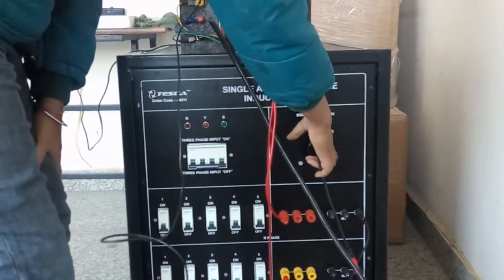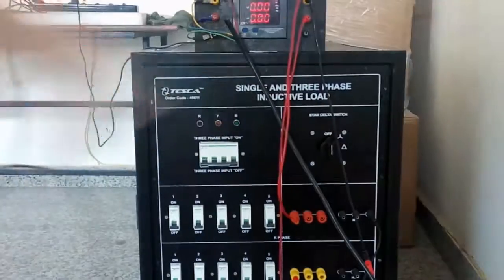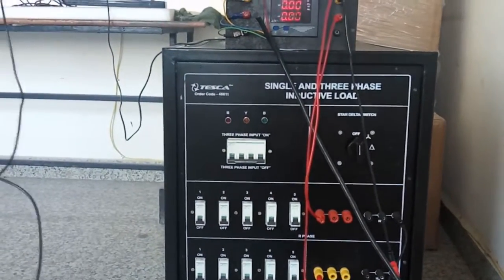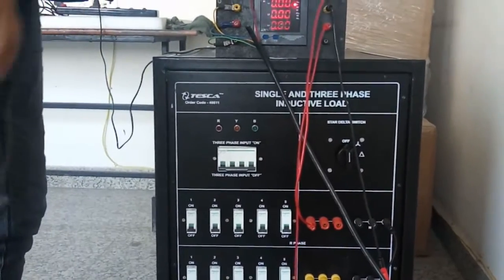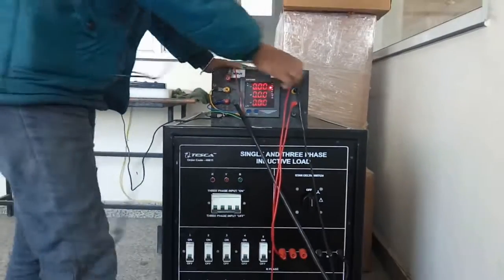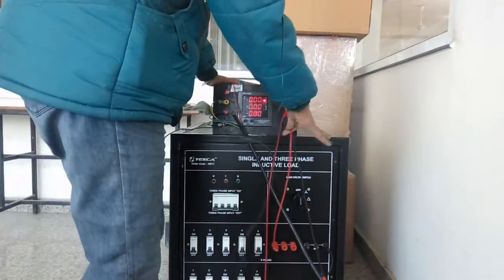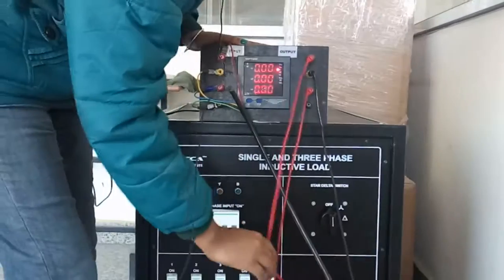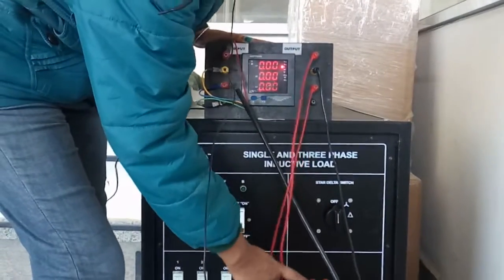First, from your three-phase power supply, give input to the multi-functional meter. This is the input section. From the output section of the multi-functional meter, we have connected to this terminal. Connect R to R, Y to Y, and B to B terminal.